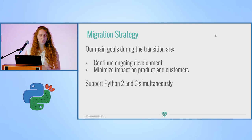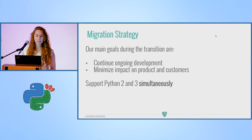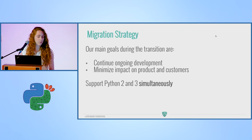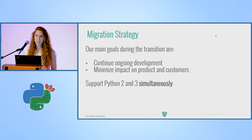We had two main goals doing the transition: to continue ongoing development and to minimize impact on products and customers. These main goals dictated our migration strategy. We wanted our developers to continue working as if the migration didn't take place, and we wanted our customers to not know about it at all. That's why we decided to support Python 2 and 3 simultaneously — to write code that can run in Python 2 and Python 3 and give the same results.